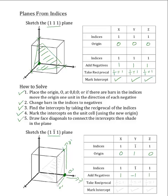Now the next step is to take the reciprocals of these indices. So we will take 1 over the x-index, which is 1, and that will give us our x-intercept, which is 1. We will take 1 over our y-index, which is negative 1, and that will give us our y-intercept, negative 1. And finally, we will take 1 over our z-index, which is 1, and that will give us our z-intercept, 1.